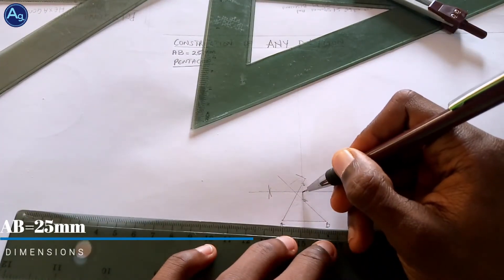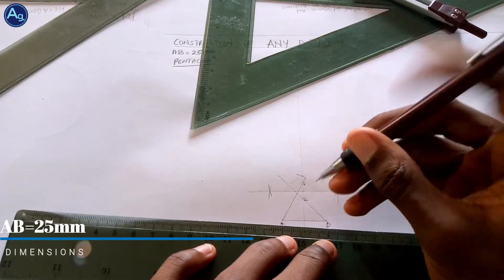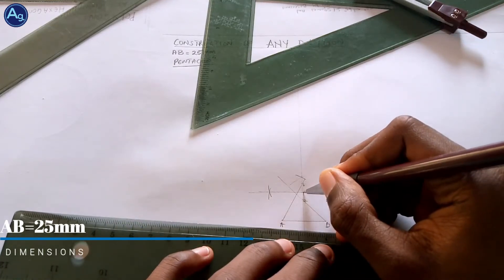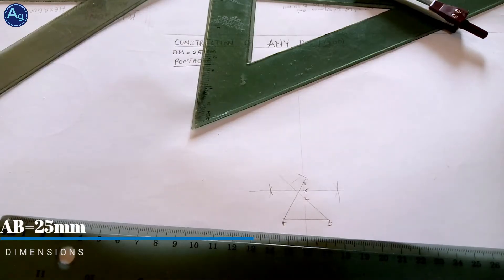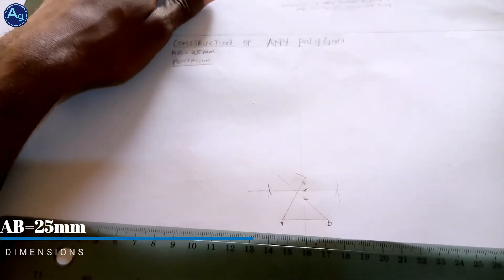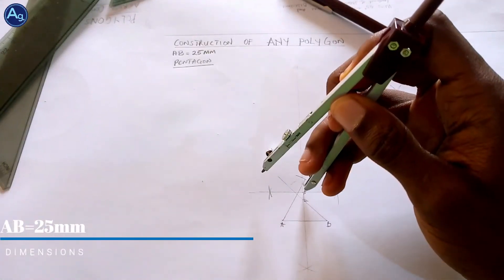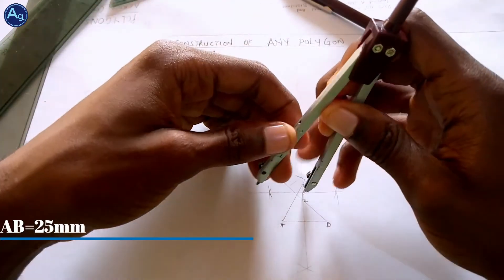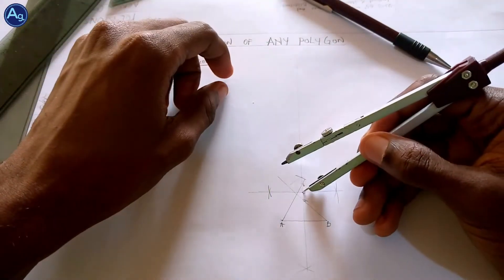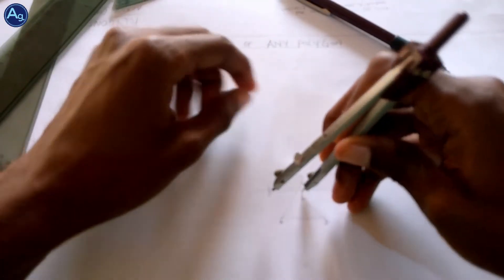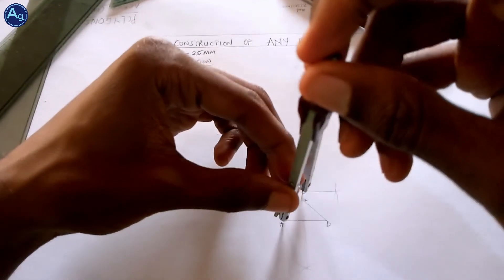So this is our point 5. At this point 5 I'm going to draw a circle from point 5 to point A as our radius, draw a circle.